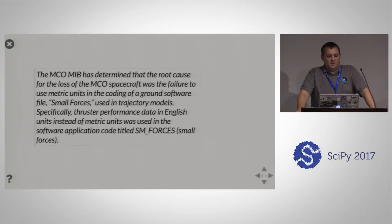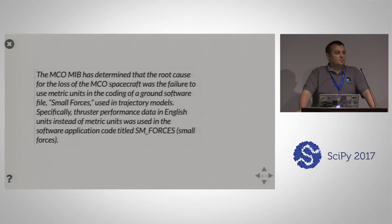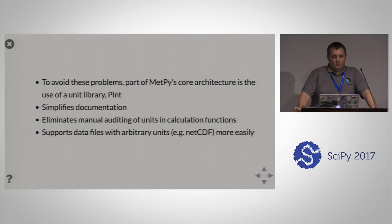One of those motivating examples of when units aren't done properly was the Mars Climate Orbiter, which essentially bounced off of Mars. It failed to enter orbit because one of the software modules used in trajectory calculation put out values in English instead of metric units, and because of that, a multiple-hundred-million-dollar spacecraft did nothing but shoot off into space. So we wanted to avoid those problems in MetPy.